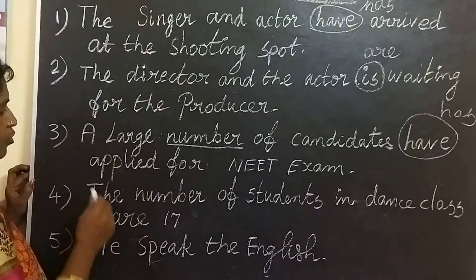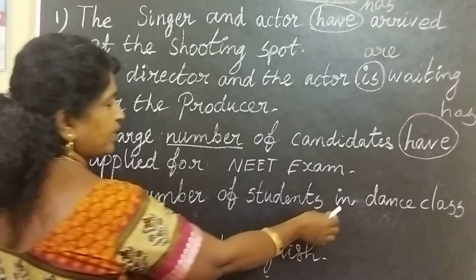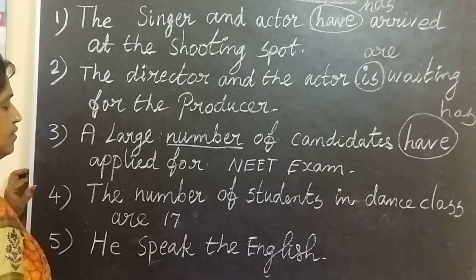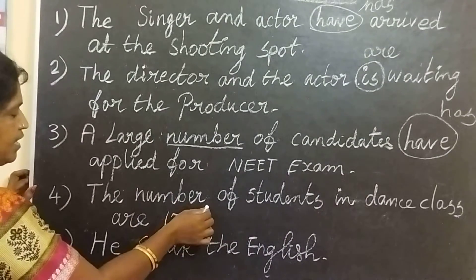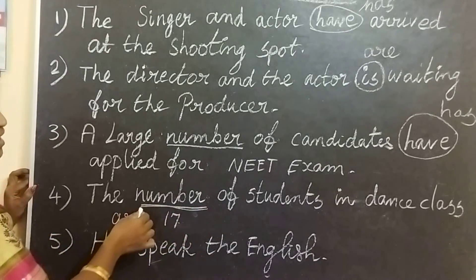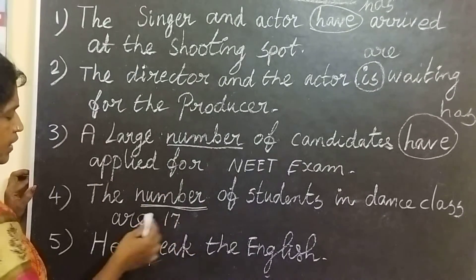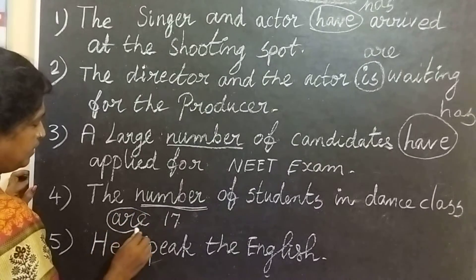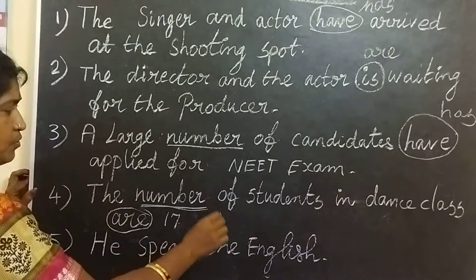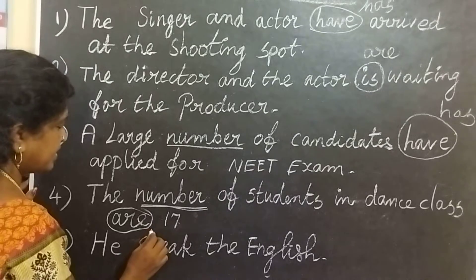Fourth one: the number of students in dance class are 17. So, the number of candidates is — a large number of candidates.